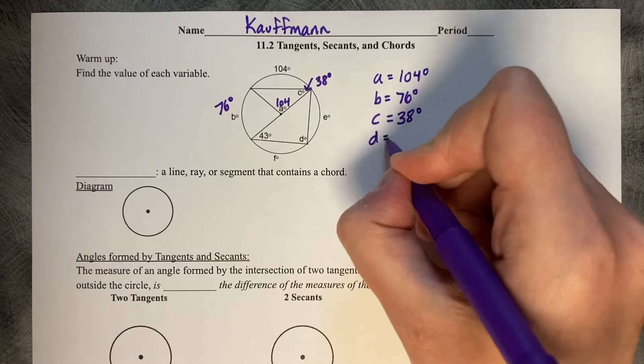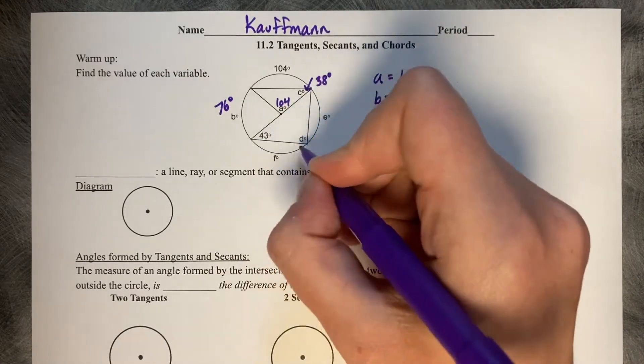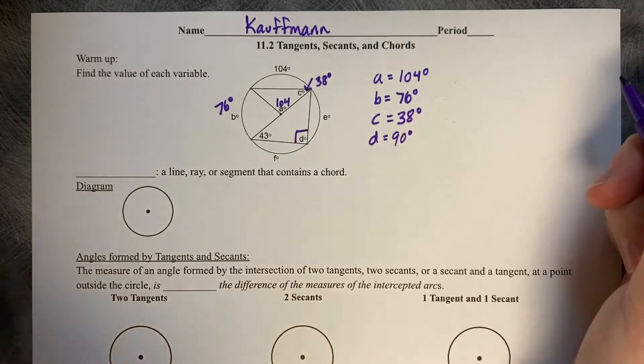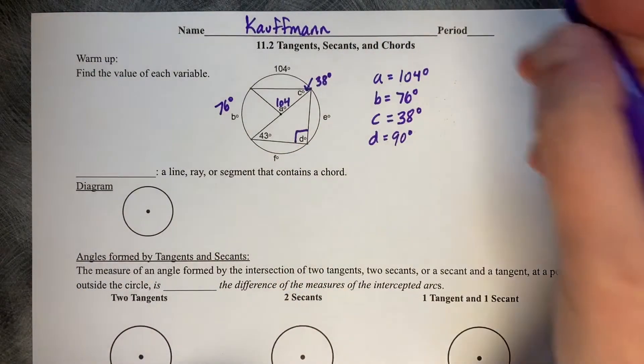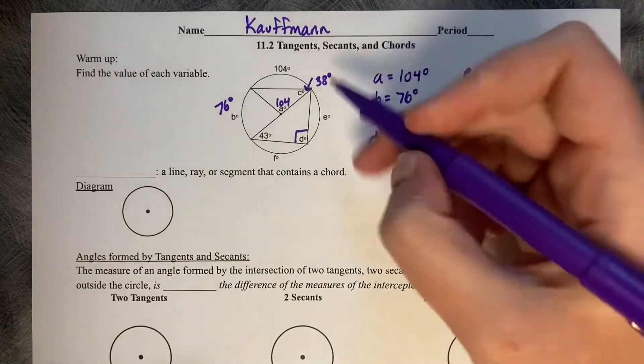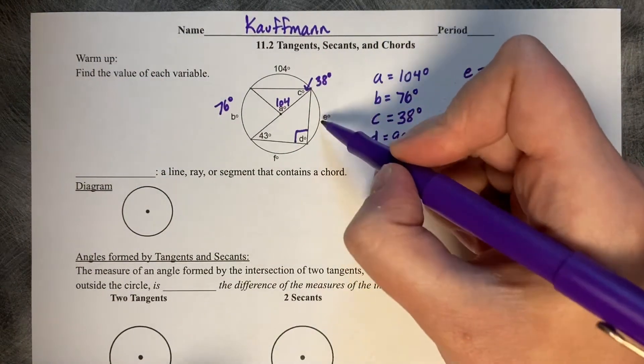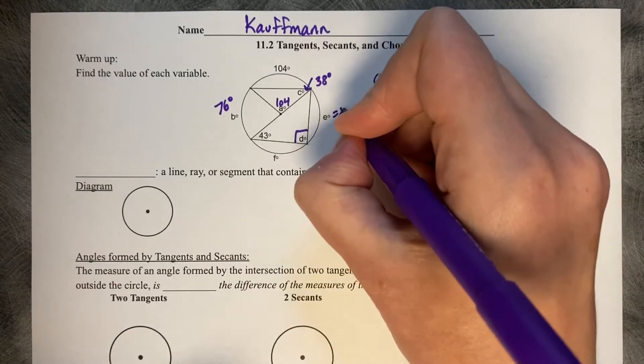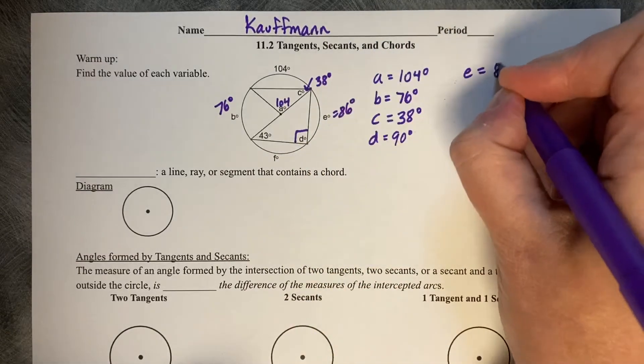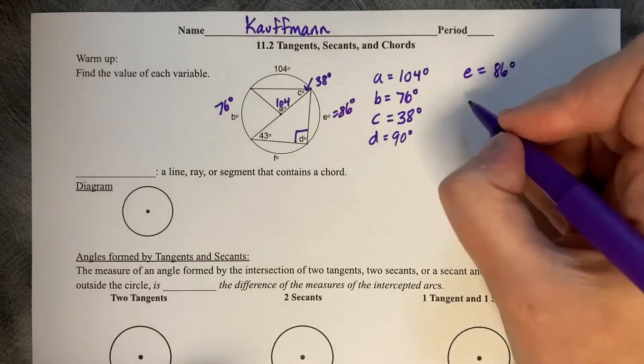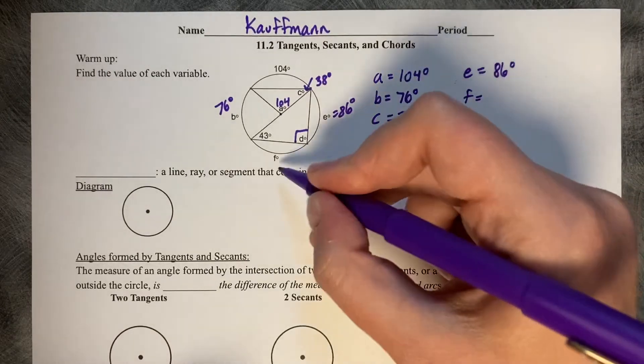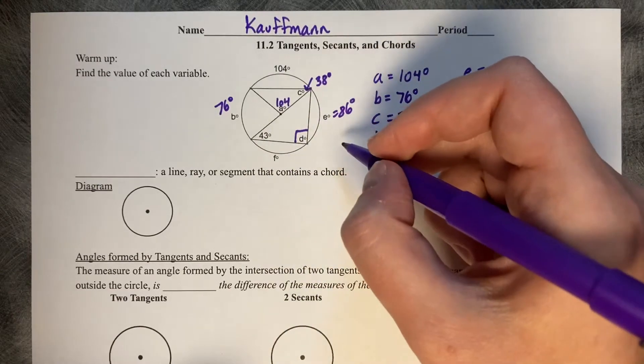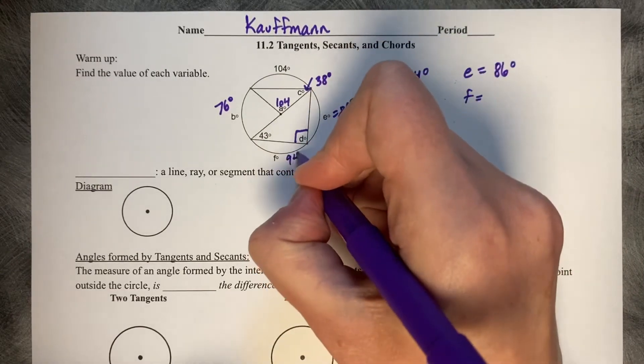Angle D corresponds to a diameter, so D is 90 degrees. Arc E corresponds to 43. It's double the size, so 43 times 2 is 86. And finally, F. 86 and F correspond to the diameter, so 180 minus 86 leaves me with 94 degrees.